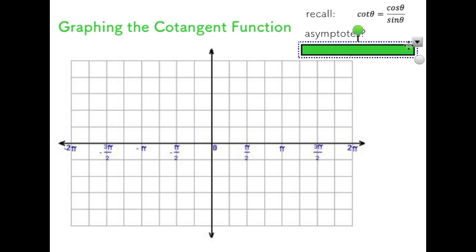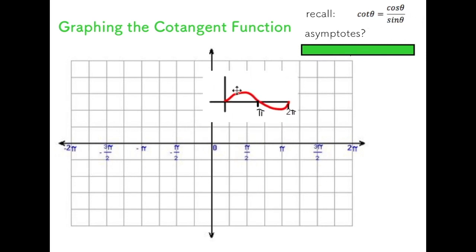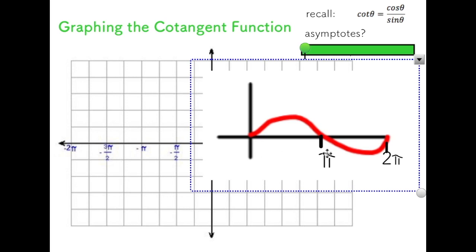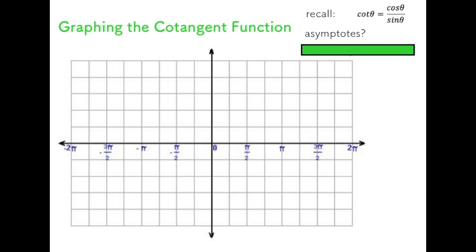Looking at this function, I'm going to start by looking at the asymptotes. Because sine is in the bottom, if I look at the graph of sine, wherever sine has x-intercepts — i.e., whenever the sine is zero — my cotangent function should have asymptotes because I would have zero in the denominator. The graph of sine has x-intercepts at zero, pi, two pi, and so on. So I can graph vertical asymptotes every pi radians.